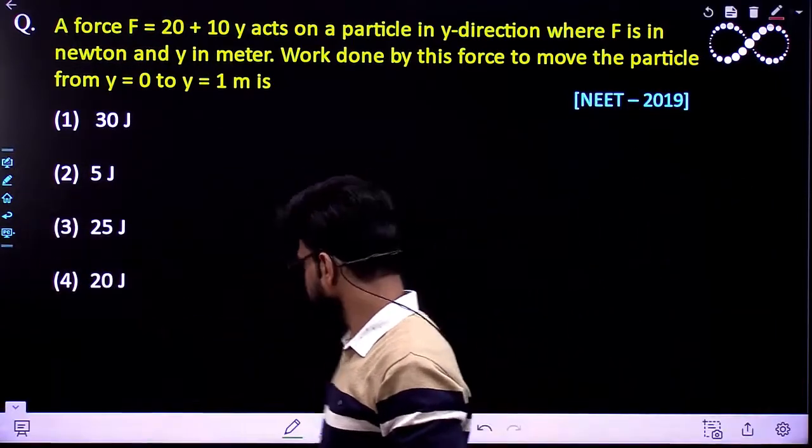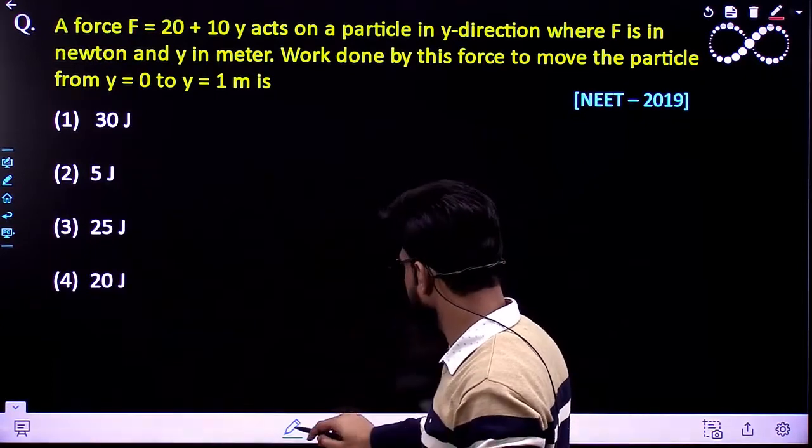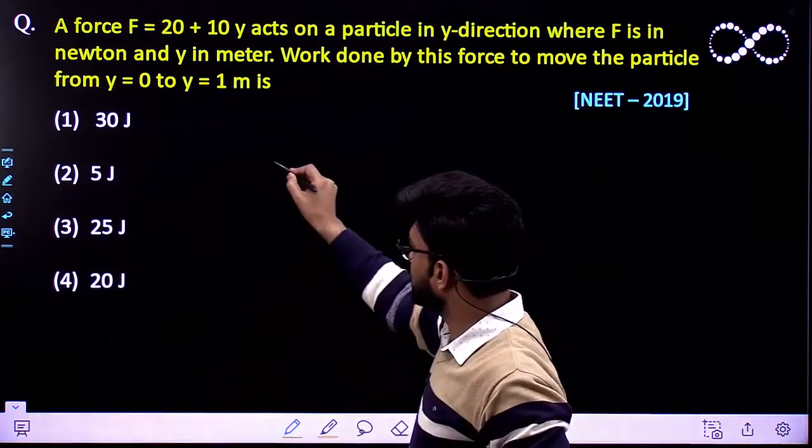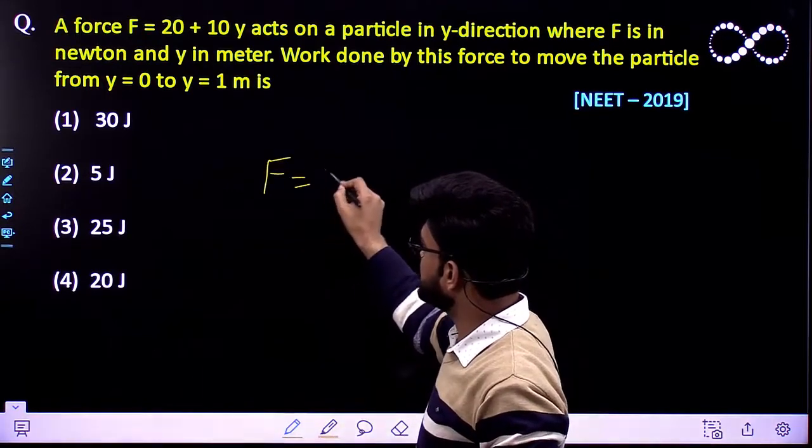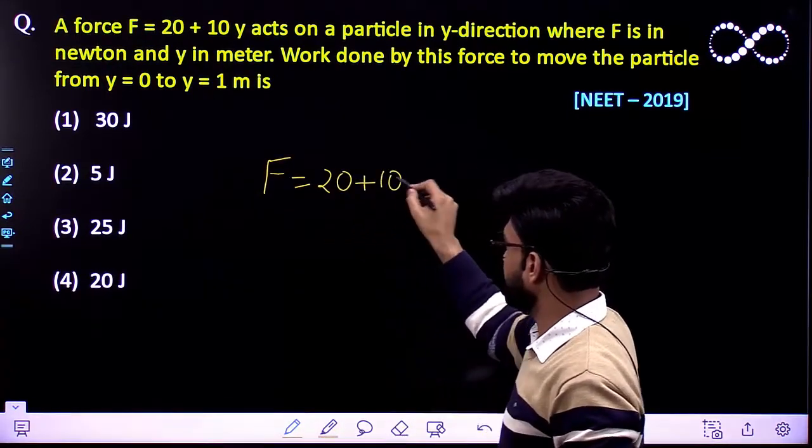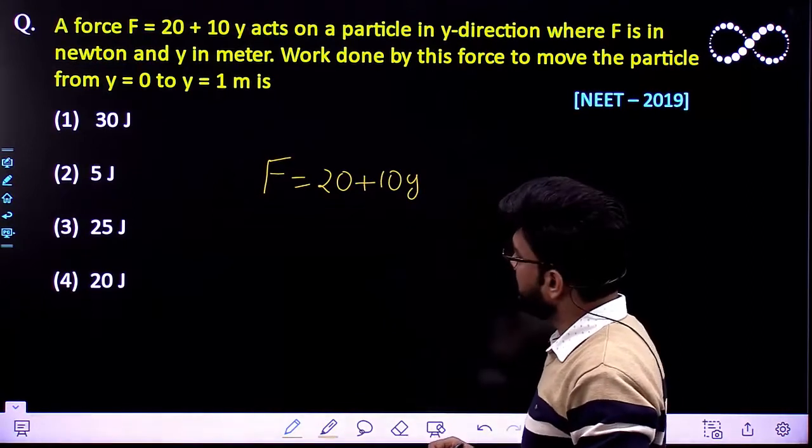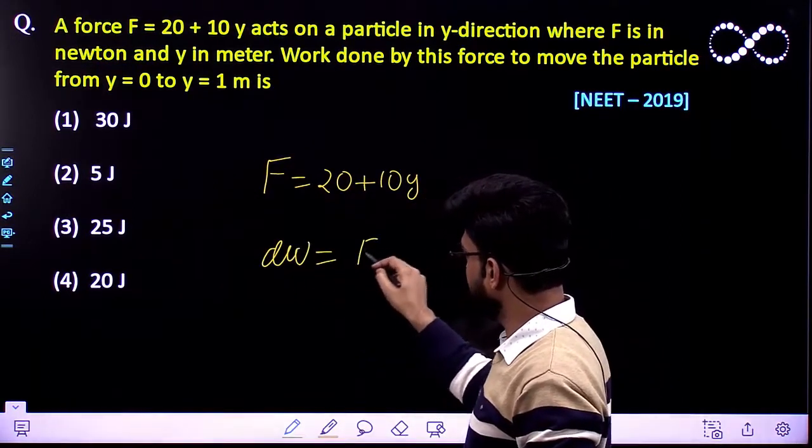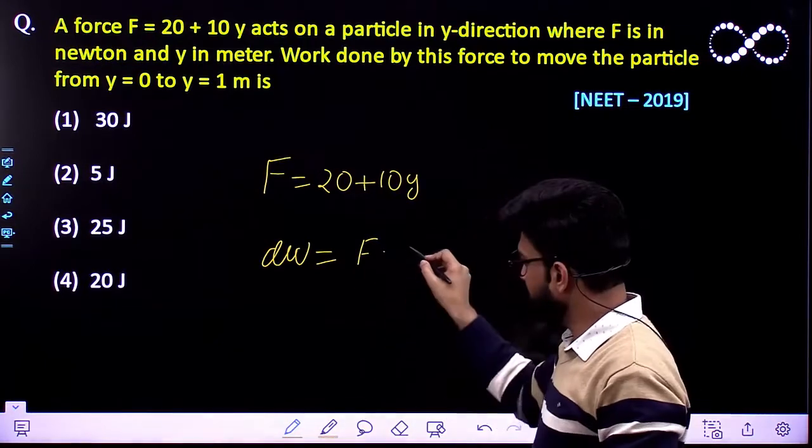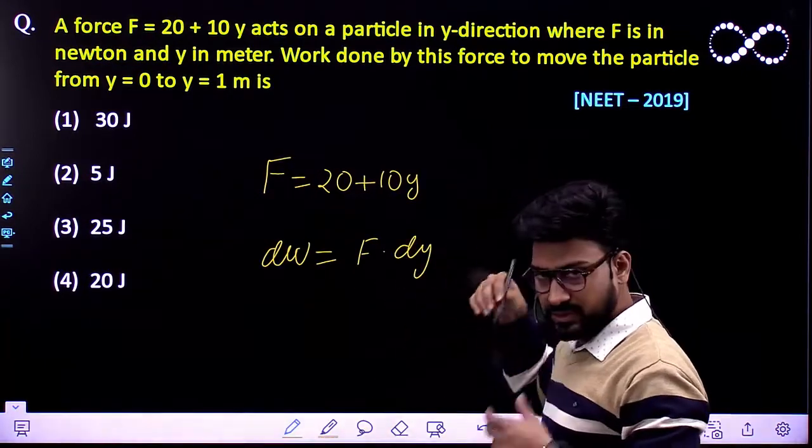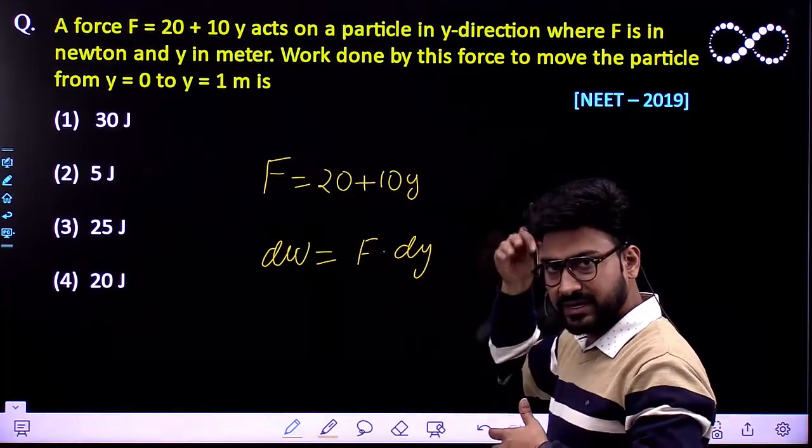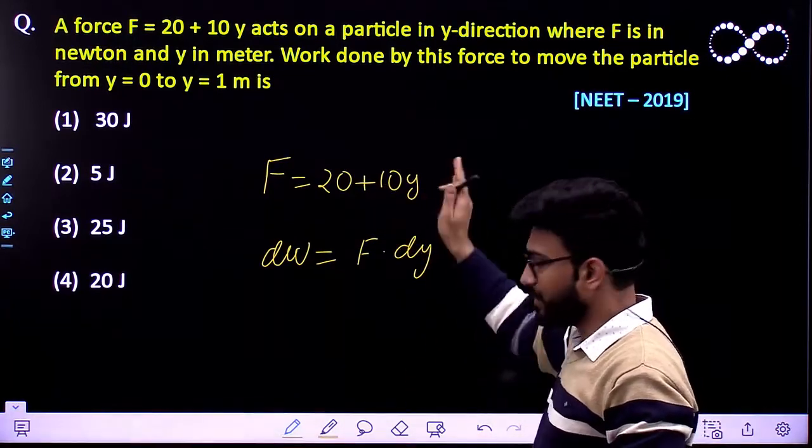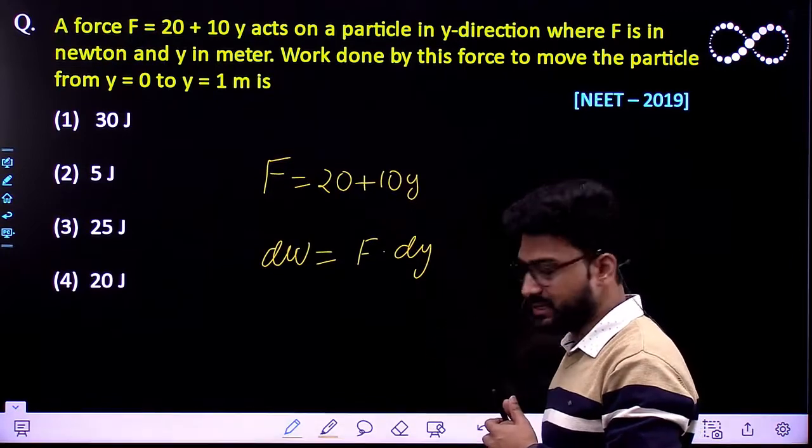So that means you have been given a force which is given by relationship 20 plus 10Y. And work done, small work done is given by relationship F dot DY since it is moving in Y direction and force is also acting in the Y direction. So along the Y direction only the work done would be done.